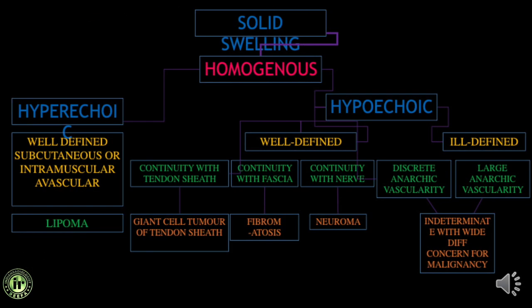For solid swellings, they may be homogeneous or heterogeneous. Homogeneous, hyperechoic, subcutaneous, avascular swellings are usually lipomas. Hypoechoic swellings can be well or ill defined. Well-defined swellings with continuity to the tendon sheath and marked internal vascularity are usually giant cell tumor of the tendon sheath. Continuity with fascia suggests fibromatosis; continuity with a nerve suggests neuroma. Well or ill-defined swellings with anarchic internal vascularity represent an indeterminate mass with concern for malignancy, requiring MRI or biopsy.